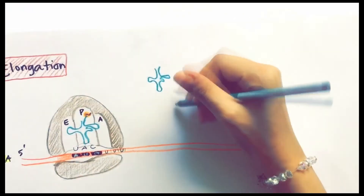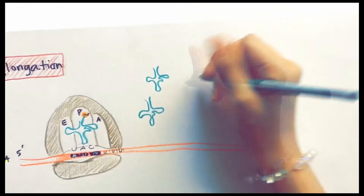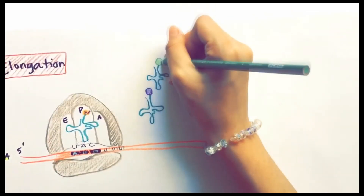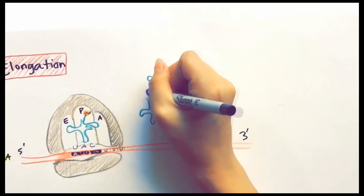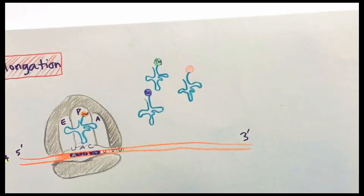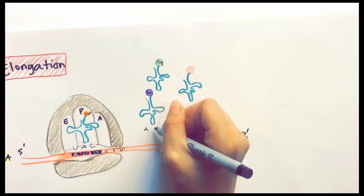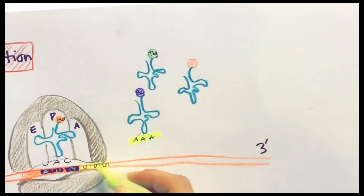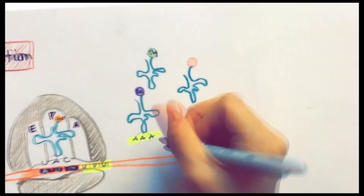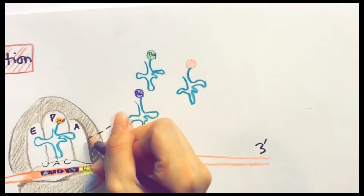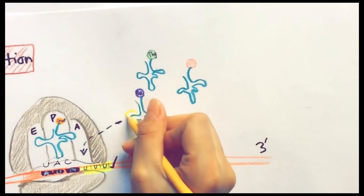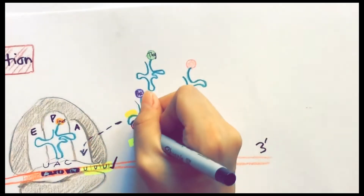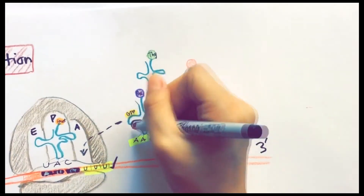During elongation, amino acids are added one at a time to a growing polypeptide. To begin elongation, a charged tRNA brings a new amino acid to the ribosome at the A-site, so it can be attached to the end of the growing polypeptide. The short polypeptide is attached to the tRNA at the P-site. A charged tRNA complementary to the codon in the mRNA binds to the A-site. The hydrolysis of GTP by the elongation factor EF-TU provides energy for this binding.